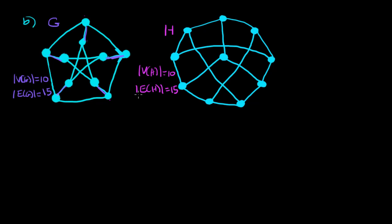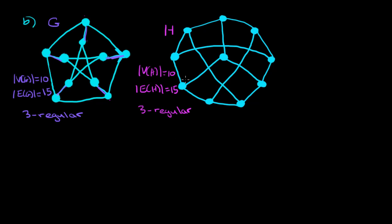Now let's see if we run into any problems similar to the previous example. In that example, there was a vertex in G of degree four but no such vertex in H. Let's look at the degrees here. In fact, G is three-regular — every vertex in G has degree three. And if you look at H, you'll find it's also three-regular. So maybe we have a hope of showing that they are isomorphic.